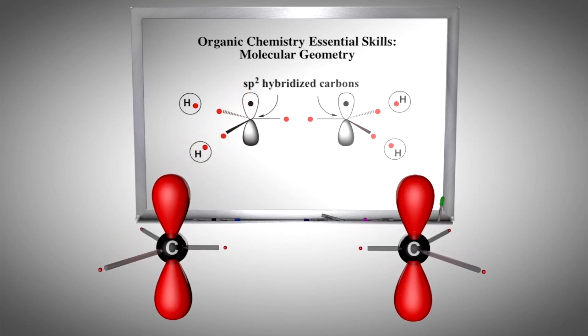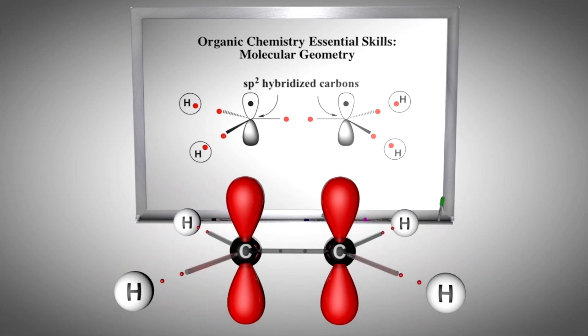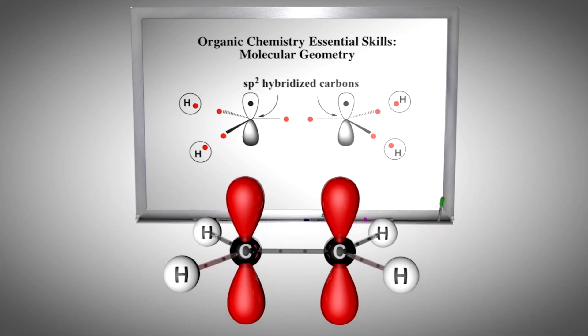We can begin to envision the molecule in three dimensions by starting with two sp2 hybridized building blocks, forming the C-C sigma bond and the four carbon-hydrogen sigma bonds, which affords the planar sigma bond framework for ethylene. Thus, all atoms are approximately 120 degrees apart.